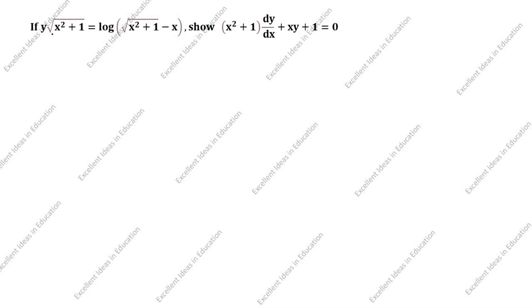If y times √(x²+1) = log(√(x²+1) − x), show that (x²+1) dy/dx + xy + 1 = 0. We need to prove this. What is given in this question? y√(x²+1) = log(√(x²+1) − x).